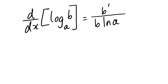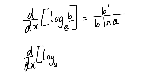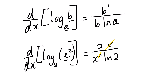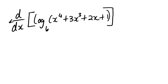Our next topic is the derivative of log base b of x. The derivative of log base b of x is the derivative of the argument divided by the argument times ln b. For example, the derivative of log base 2 of x² is the derivative of x², which is 2x, divided by x² times ln 2. One x cancels, giving a final answer of 2 over x ln 2.